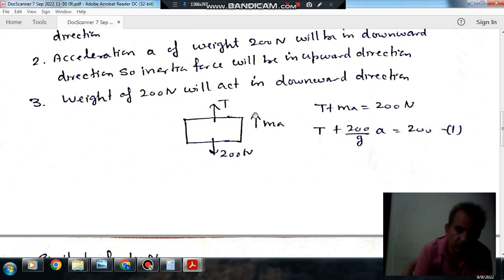Equating this, T plus MA equals 200, and M here is 200N by G. Putting the value of M here, 200 by G, the equation becomes T plus 200 by G into A equals 200. This is equation 1.